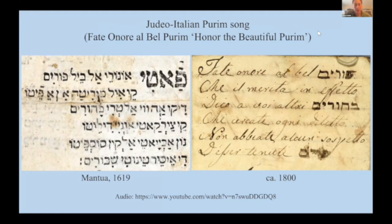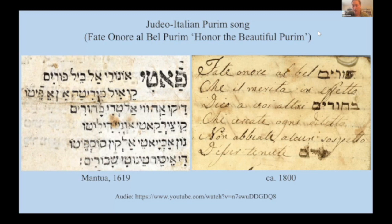This text appears in two different versions. On the left of the slide, you see an all-Hebrew-letter version that was actually published — printed in Mantua in 1619. It's a very well-known song that was sung for Purim; the link is at the bottom of the slide. On the right of the slide you see the same exact verse of this poem, but the Italian was written in the Italian alphabet, and only the Hebrew words were written in the Hebrew alphabet.